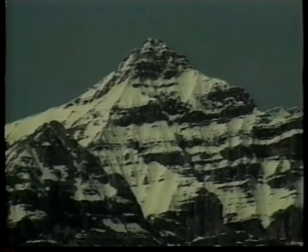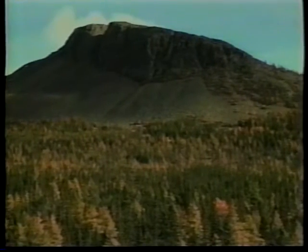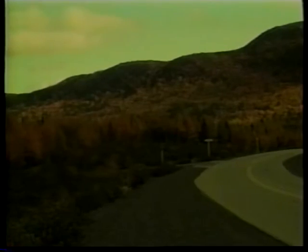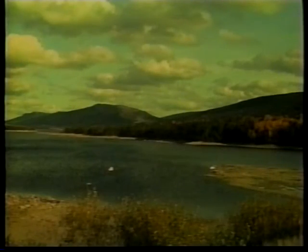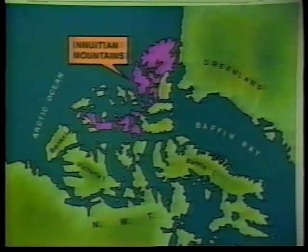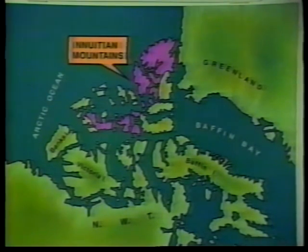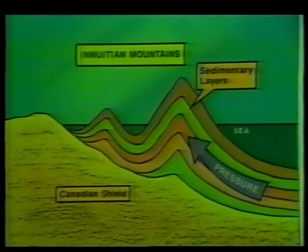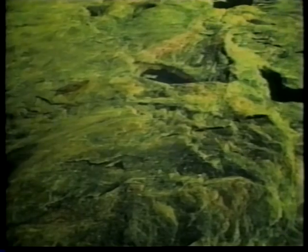At first the peaks of the Appalachians were jagged, but over time they have eroded. Today the area is made up of rounded, rolling hills and mountains and wide valleys. The Inuitian Mountains, found in the north, are similar to the Appalachians but younger. They are made up mostly of sedimentary rock with some igneous and metamorphic rock. They have not yet eroded, so they are still high and jagged.